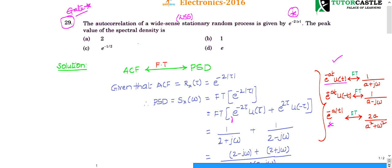What is given in the question? We don't need to know what specific process it is. The autocorrelation of some process is given as 2e^(−2|τ|). So the autocorrelation function (ACF), denoted R_x(τ), is given as e^(−2|τ|).